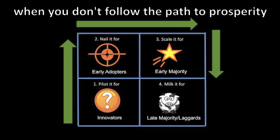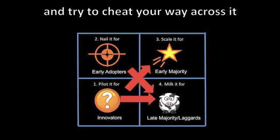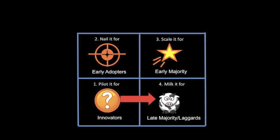There are also three classic strategic follies. Follies occur when you don't follow the path to prosperity and you try to cheat your way across it. The first folly is called the face plant. That's when you're innovating a product into a commodity market.